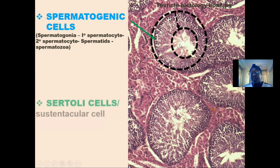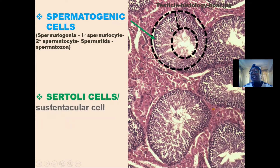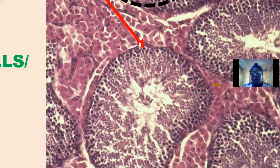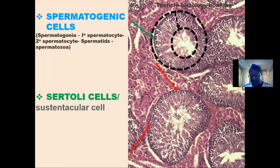The second type of cell is the Sertoli cell. They are the supporting cells and are located within the spermatogenic cells. They tend to give structural support to the spermatogenic cells and also help to provide nutrients and nourishment for the developing spermatogenic cells. Here is the Sertoli cell — you can see it embedded within the spermatogenic cells. This is another Sertoli cell in this region of the seminiferous tubule.